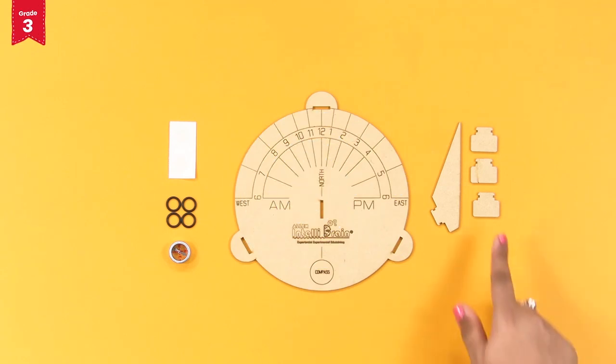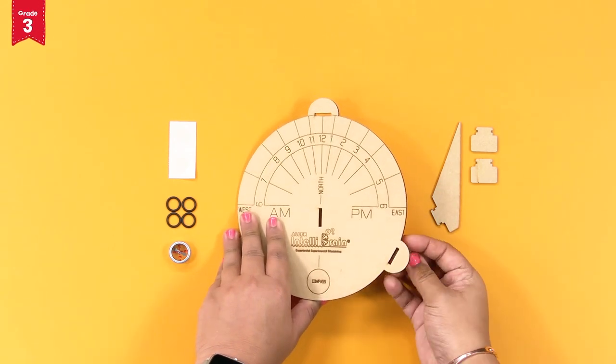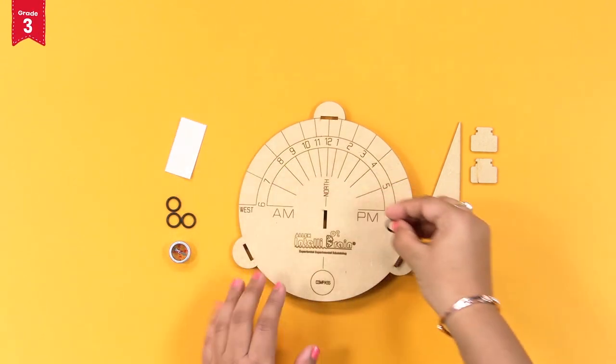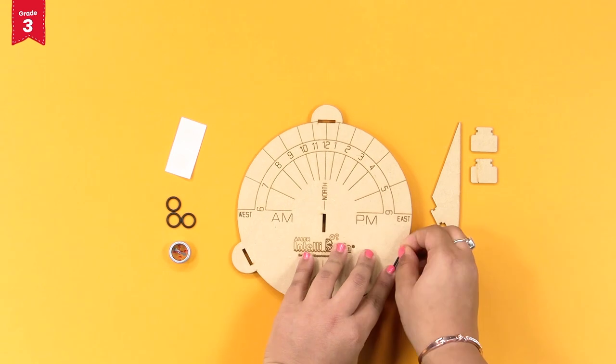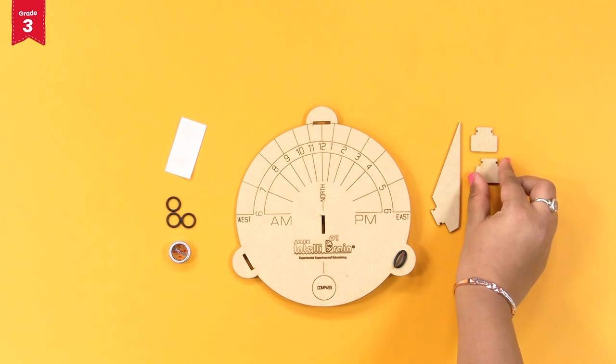Insert one of the stand parts in one slit on the sundial base from the bottom side like this. Fix this with an o-ring from the top. Similarly, fix the other two stand parts also.